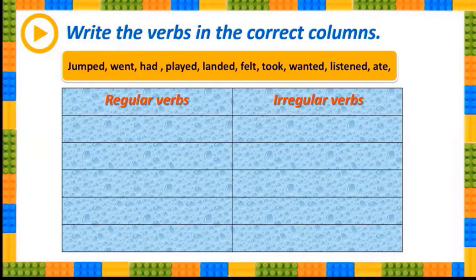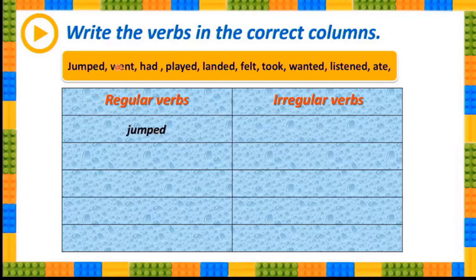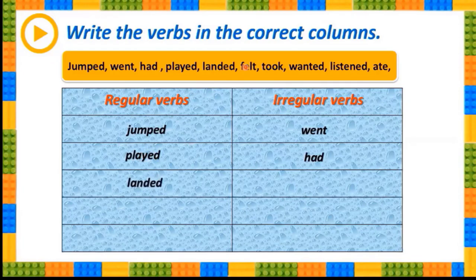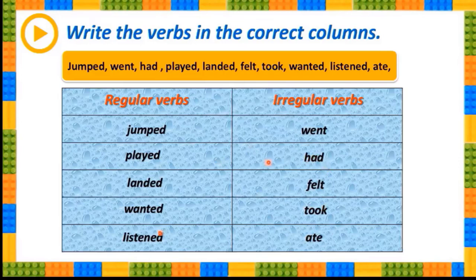In this yellow box we have got ten verbs that are regular and irregular. We will try to write them in the correct column. Let's start: 'jump' - regular verb, because it has -ed. 'Went' - irregular. 'Had' - irregular. 'Played' - regular. 'Landed' - regular. 'Felt' - irregular. 'Took' - irregular. 'Wanted' - regular. 'Listened' - regular. 'Ex' goes to irregular. These are our regular and irregular verbs.